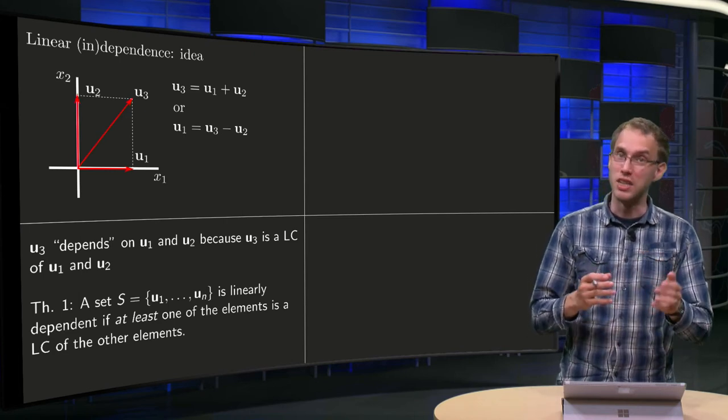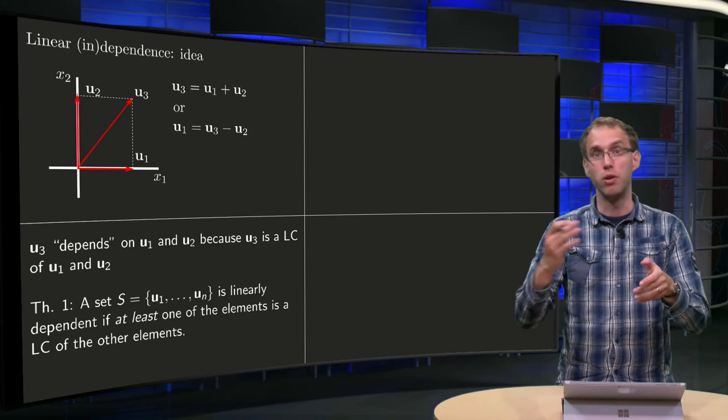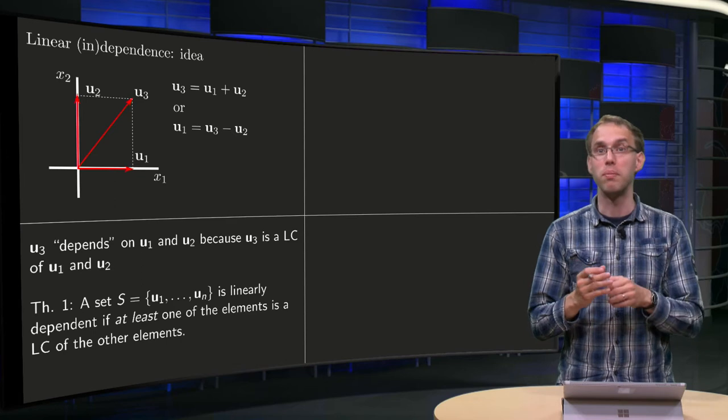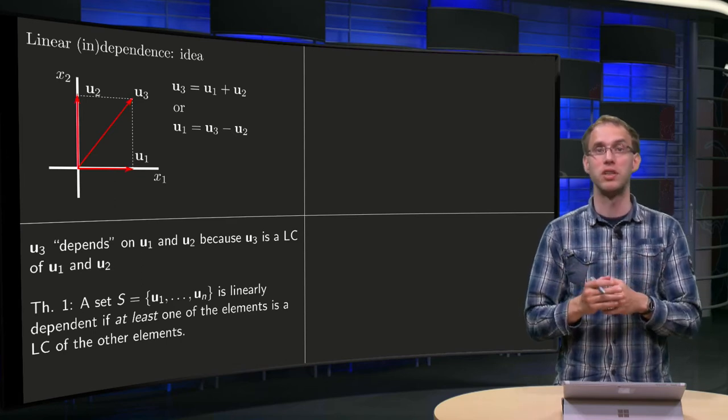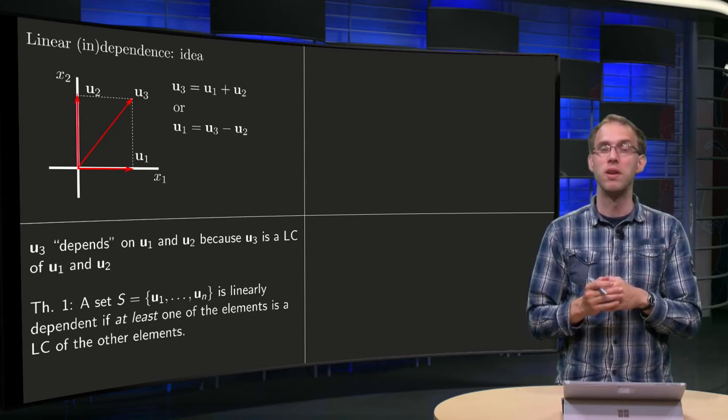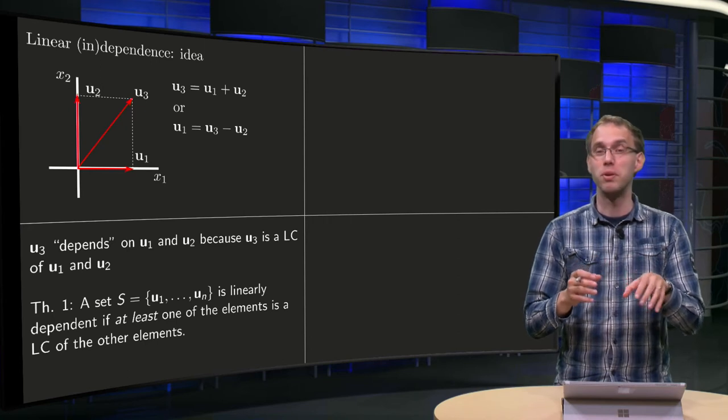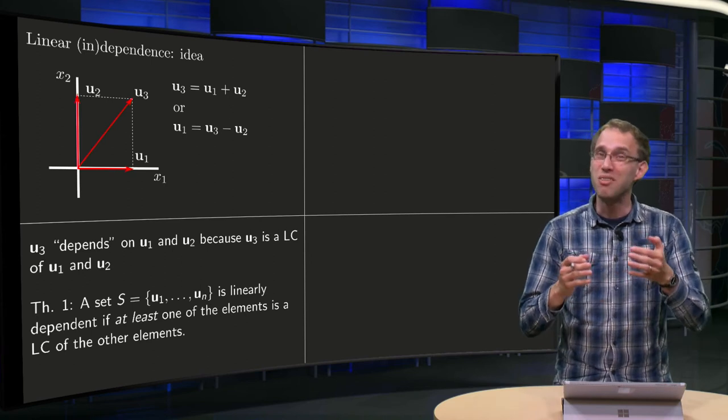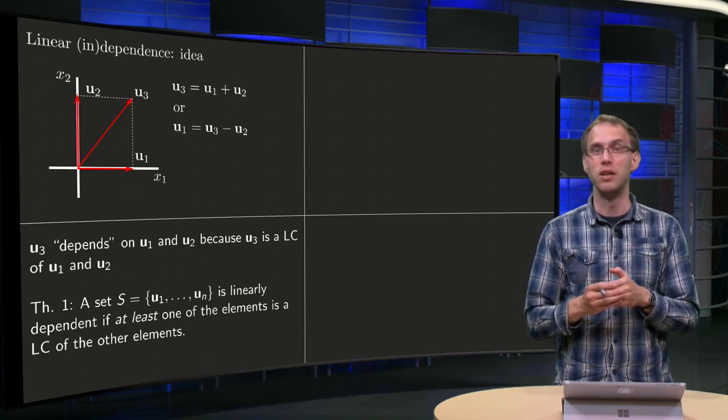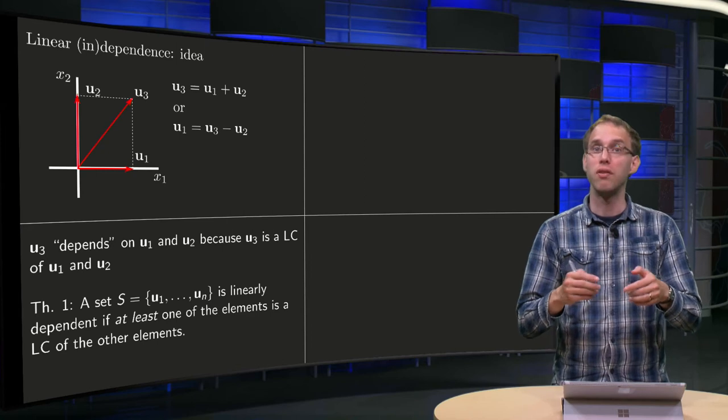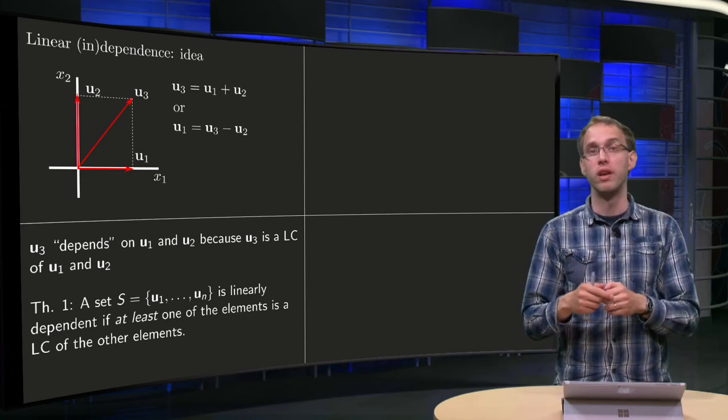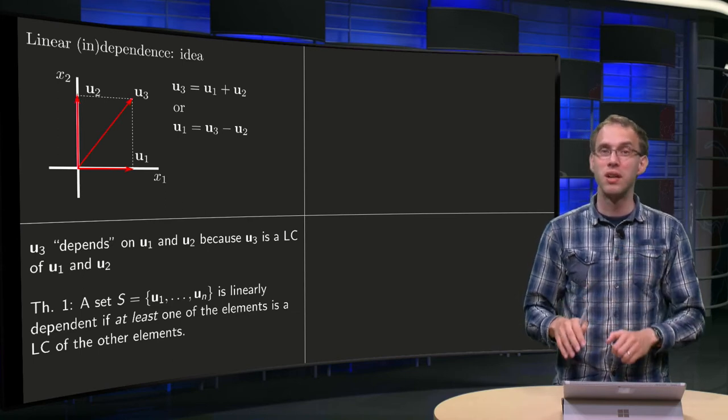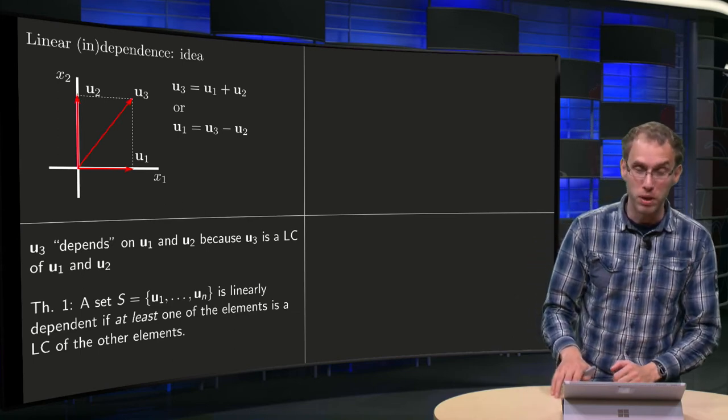What do we mean by that? A set containing n vectors u1 up to un is said to be dependent, if at least one of the members is a combination of the other members. Now that's a theorem. So why is this a theorem and not a definition yet? Well as you might see from the theorem, it might be inconvenient to use this as a definition, because if you want to check this in practice, you would have to go through all elements of the set in order to find whether one of them is dependent on all the others. So that's quite a bit of work.